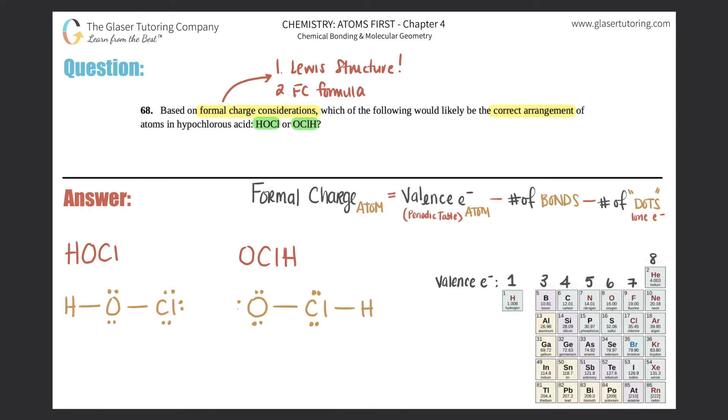Here are my two structures, and now we just have to do the formal charge. The only thing that looks similar here is the hydrogens. This hydrogen and this hydrogen look exactly the same because they both have one bond attached and no lone pairs. If I know the formal charge for this hydrogen, I'll know it for this hydrogen.